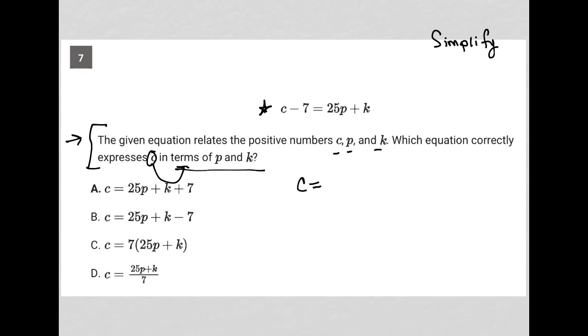We really only have one thing to do here, and that is to add 7 to both sides of this equation. In doing so, we now isolate C, and the right-hand side of this equation will be 25P plus K plus 7, which is answer choice A.